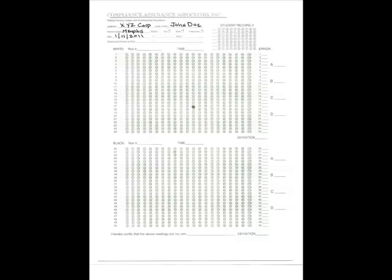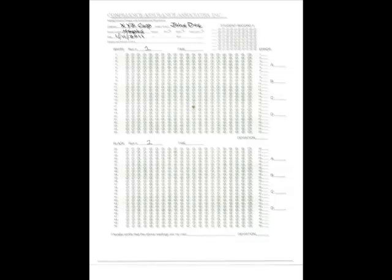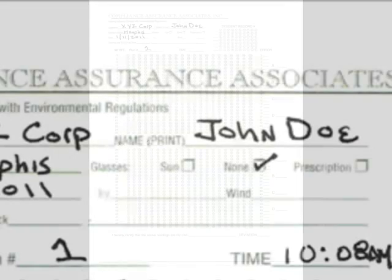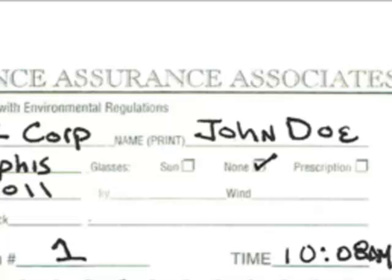Being able to connect the paperwork with this reference information creates a legally traceable record of your certification. You can go ahead and fill in the run number for both the white and the black. This information, along with your signature at the bottom of the paperwork at the end of the test, is critical in order to assure the legal traceability of your certification. We will also want to make sure we complete the header information, marking if we are wearing sunglasses, prescription glasses, or none. In the case of glasses which change with the intensity of the sun or prescription sunglasses, mark both sunglasses and prescription.